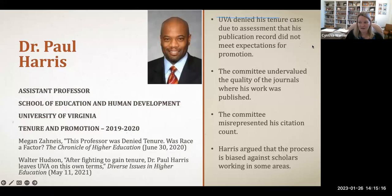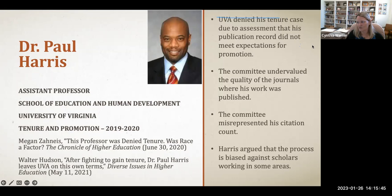Some of the committee's comments were erroneous — they stated he had about 50 citations when he actually had about five times that many. In his appeal, he pointed out these errors and noted that the P&T committee lacked diversity, with no persons of color on the college or department level committee. His appeal was unsuccessful, but after public uproar the decision was reversed and he was awarded tenure. However, his tenure experience left him with a bad taste in his mouth, and a year later he left UVA to accept a position at Penn State.